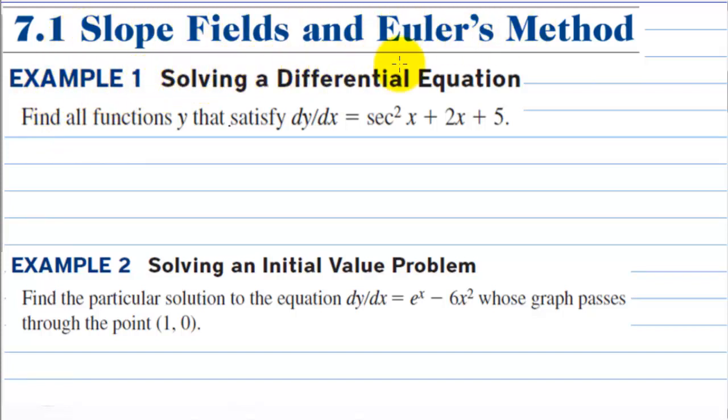Example 1. Solving a differential equation. Find all functions y that satisfy the derivative is equal to secant squared x plus 2x plus 5. We have dy/dx equals secant squared x plus 2x plus 5, and we can multiply both sides by dx. On the left side the dx is cancelled and we get dy equals secant squared x plus 2x plus 5 dx. Now in order to find out what y is we can integrate both sides.